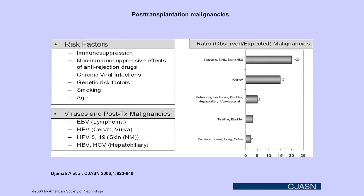Malignancies associated with transplant are another important complication over time. Risk factors include immunosuppression, viral infections, and smoking. Viruses play a very important role: lymphomas are associated with EBV, cervical cancer with HPV, and non-melanotic skin cancers with HPV. The observed-to-expected cancer ratio in transplant patients is extremely high for Kaposi's sarcoma, non-Hodgkin's lymphoma, skin cancers, and kidney cancers are also much higher compared to non-transplant patients.